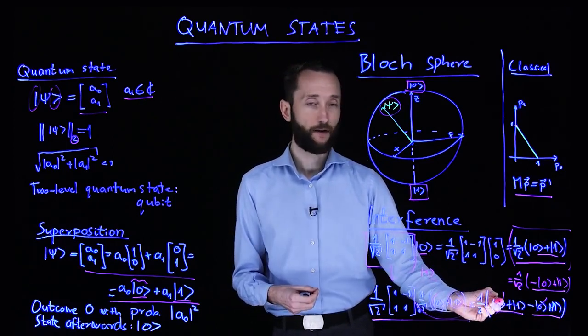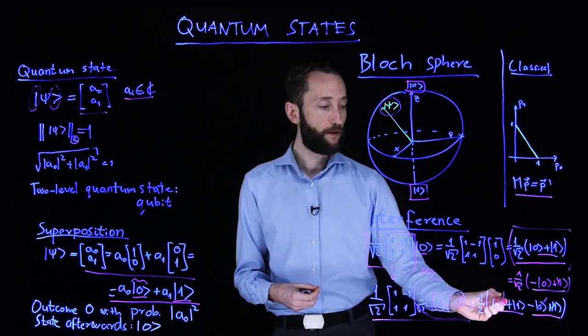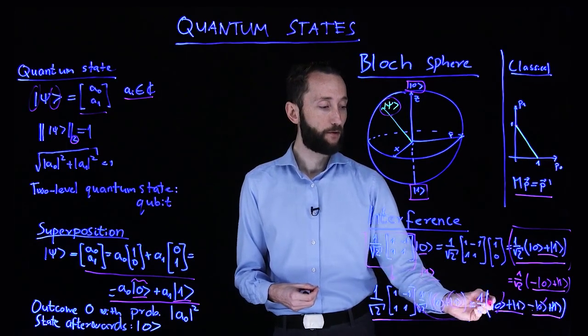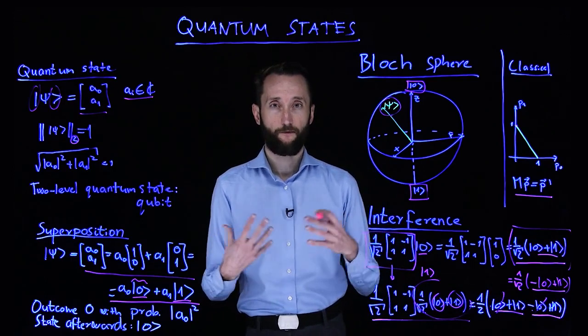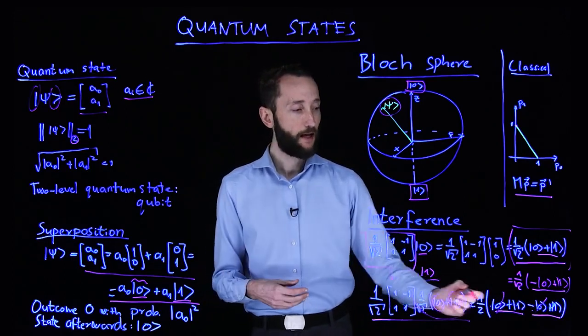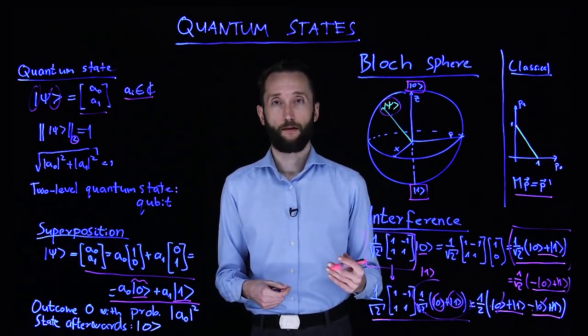So this is an example of interference. The probability amplitudes of the zero ket destructively interfere, they vanish from the superposition and you get the deterministic one outcome.